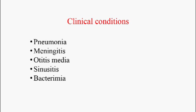Clinical conditions caused by Streptococcus pneumoniae: It can cause pneumonia — it is the most common cause of pneumonia in adults. It can cause meningitis — also the most common cause of bacterial meningitis in adults. It can cause otitis media especially in children, sinusitis in all age groups, and bacteremia. In pneumonia, symptoms include fever, headache, chills, cough, and rusty sputum. Patients can have consolidated lung, pleural effusion, and infiltrations visible on X-rays, as well as cavity formation inside lung tissues.